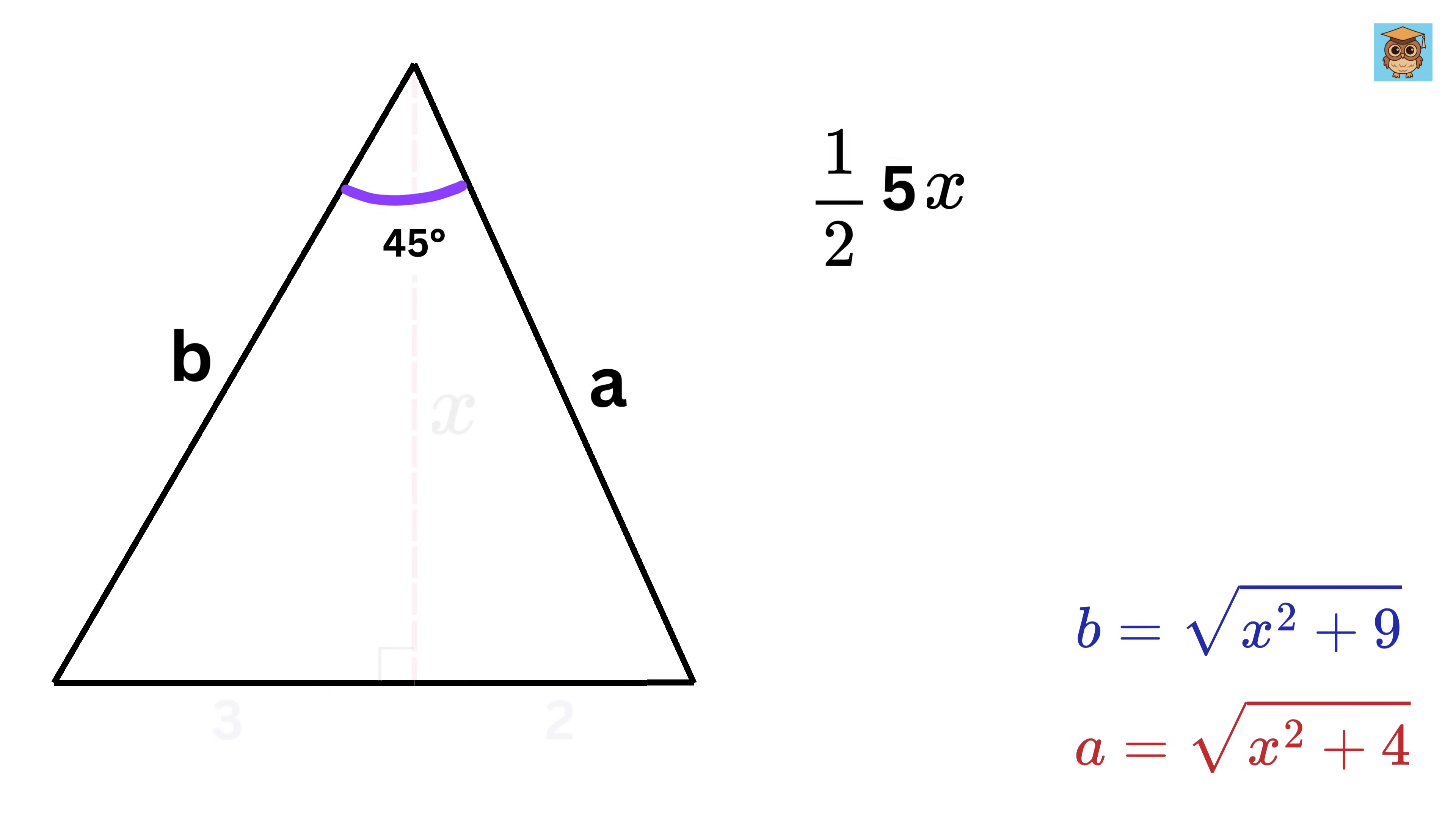Now here comes the real magic. When we have a triangle whose this side is a and this side is b and if this angle is C, then the area of that triangle is given by half times a times b times sine of angle C.